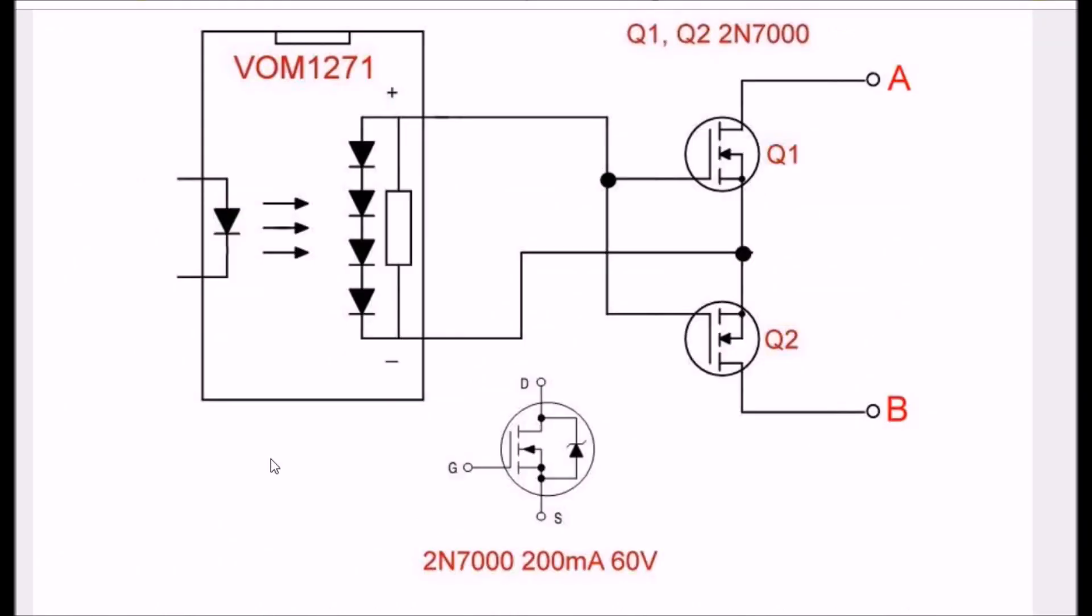So, instead of hunting around trying to find obsolete parts, I went ahead and basically made my own. This is the VOM-1271 that I'll explain in more detail in a separate video. That, essentially, when you apply a current to the LED, it produces a voltage of around 8 volts, very low current.